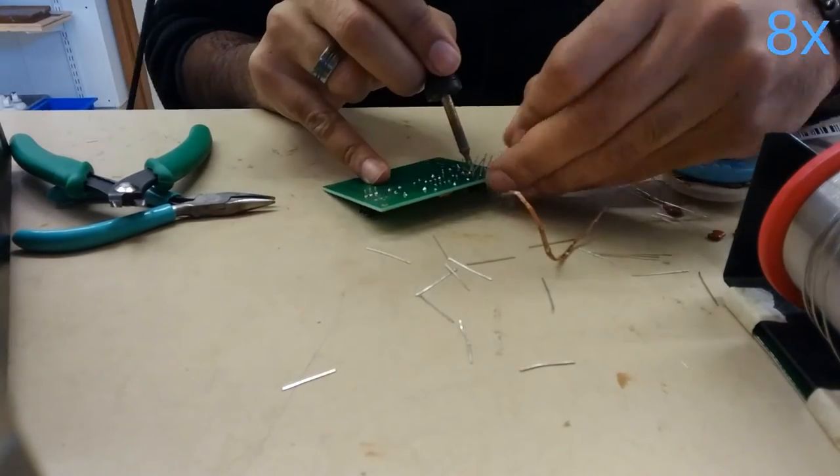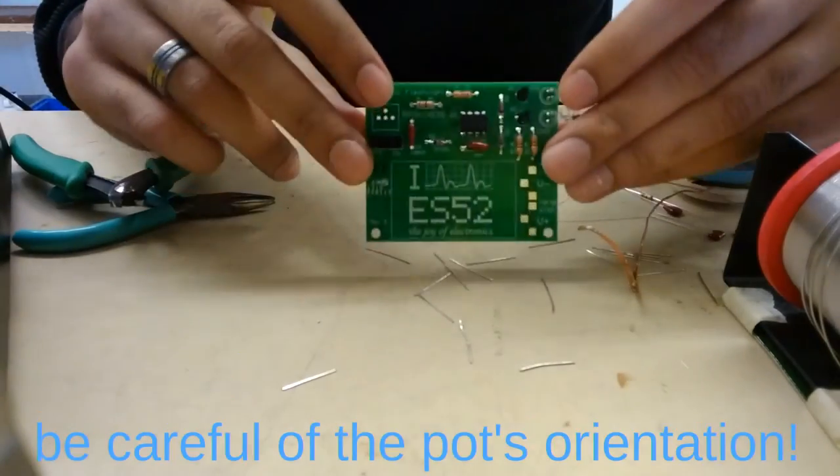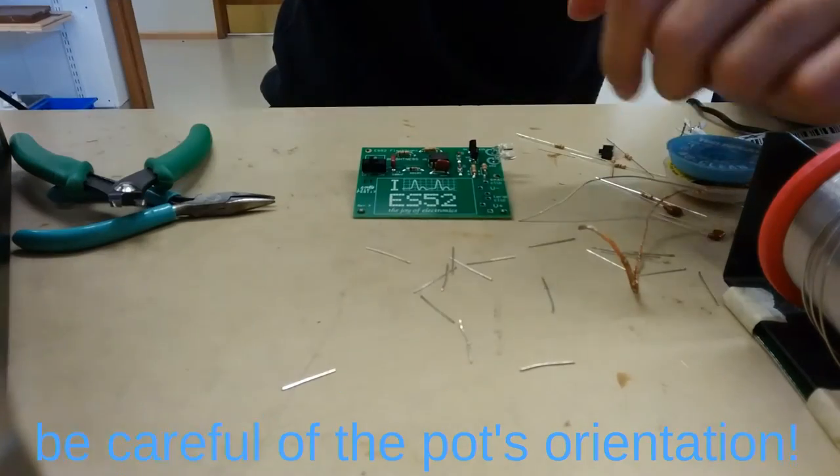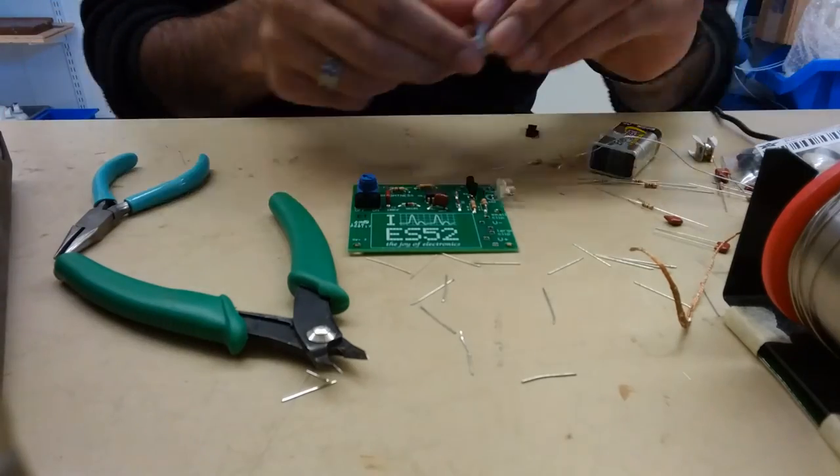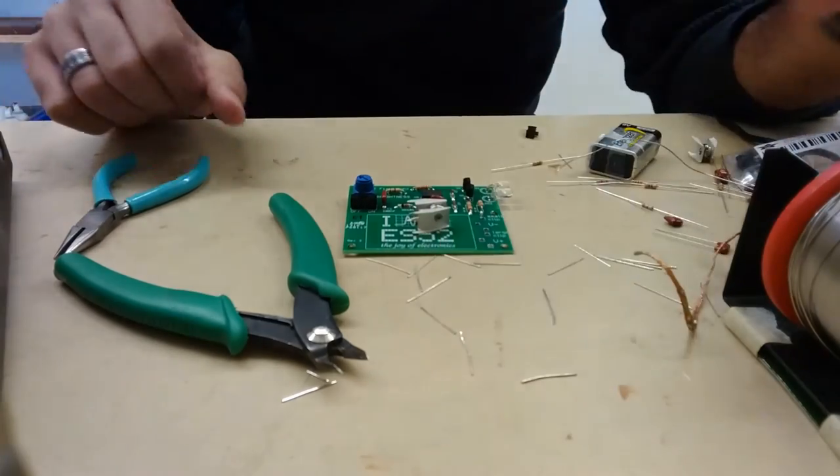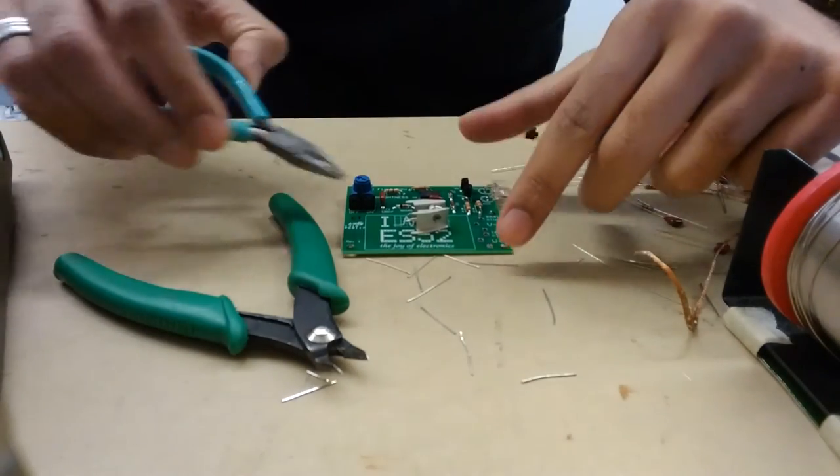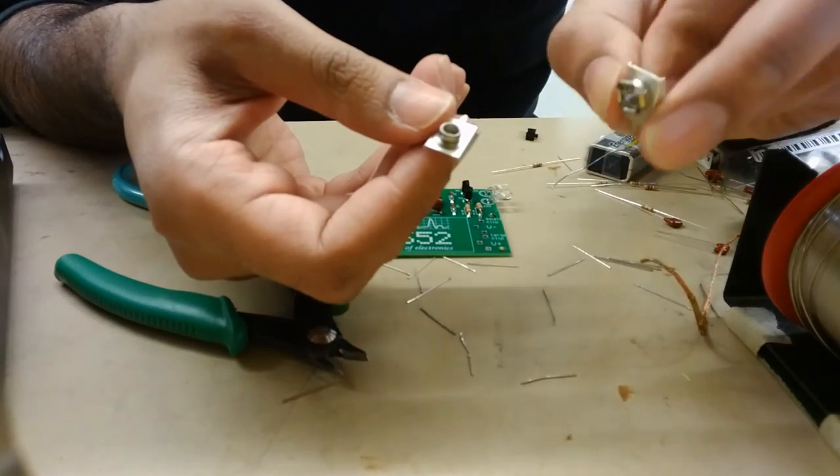Going ahead and soldering the rest of the board. It's pretty straightforward. Just be careful of the potentiometer's orientation and ask an instructor if you're unsure. You want to make sure that when you rotate it right, it goes up. Last but not least, we've got our battery clips. Notice how there's a big one and a small one, a male and a female side.